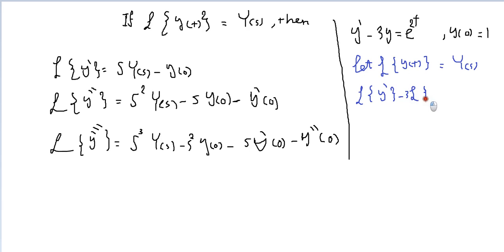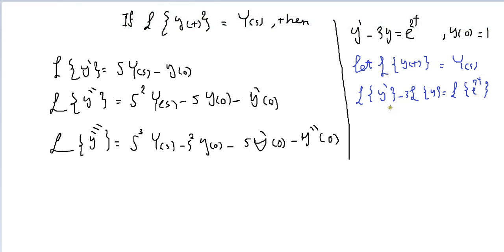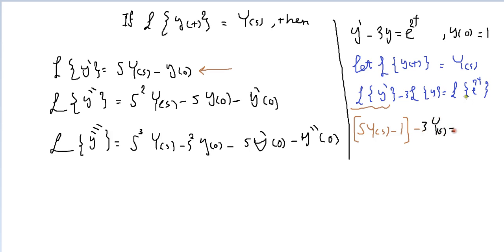Taking Laplace of both sides: Laplace of Y' minus 3 times Laplace of Y equals Laplace of e^(2t). Laplace of Y' is S·Y(s) minus Y(0), which is S·Y(s) minus 1. Then minus 3·Y(s) on the left side.